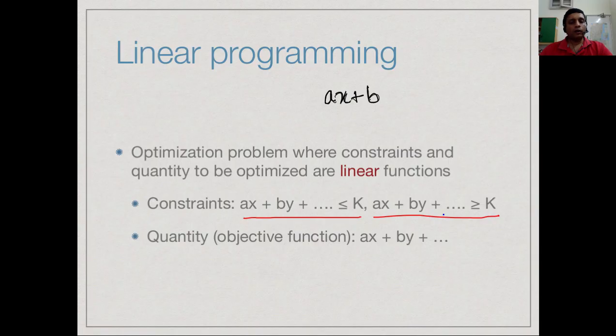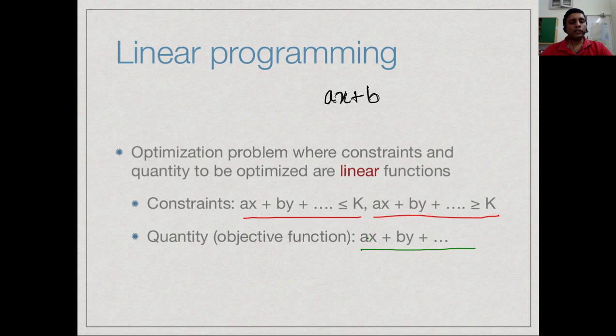These are the constraints on the values the variables can take. Now our aim is to optimize some quantity - we want to minimize or maximize some cost or some weight or something like that, and that quantity is expressed in terms of the variables by yet another linear function. So we have a different linear function which tells us what it is we are trying to optimize.